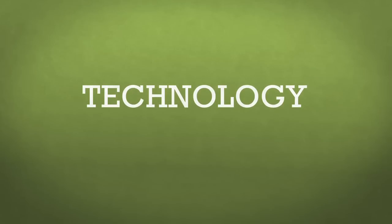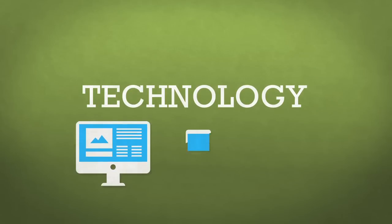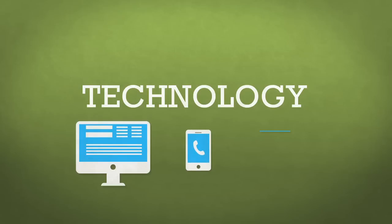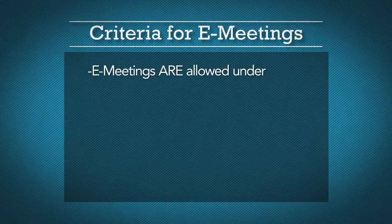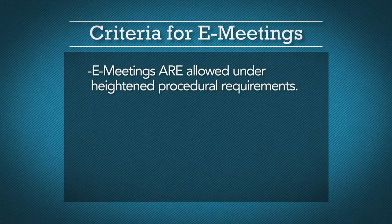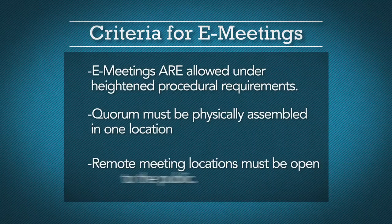It's easy to see how a simple face-to-face conversation can quickly turn into an unlawful meeting. But what about technology? In this day and age, many of our communications are done over computers, mobile devices, and through other tech-based means such as video chatting, text messages, and more. E-meetings are allowed for boards of visitors under heightened procedural and reporting requirements. For example, a quorum must be physically assembled in one location, and remote meeting locations must be open to the public — keep that in mind the next time you plan to participate while lounging at home in your PJs.